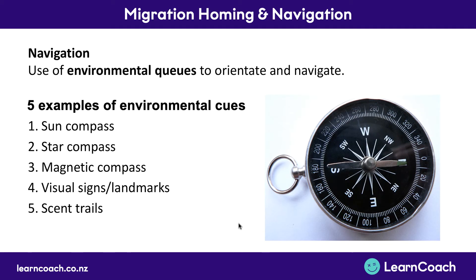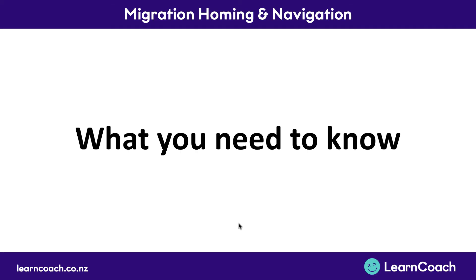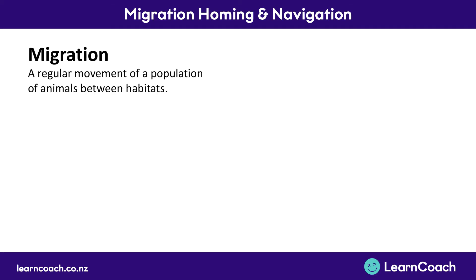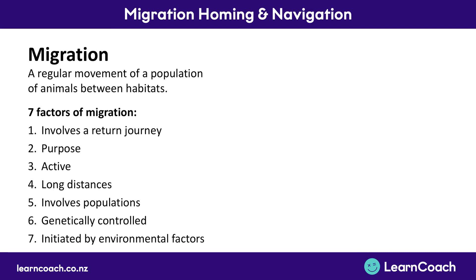Those are the five environmental cues animals use to navigate. Here's a summary: Migration is the regular movement of a population of animals between two different habitats. There are seven different factors to memorize. The most important to mention in an answer is the purpose — climate, mating, and food — and the fact that it's initiated by environmental factors, because that ties into other aspects of biology and lets you link your answers together.